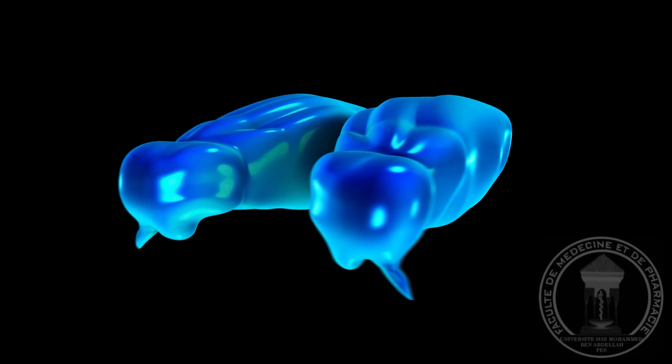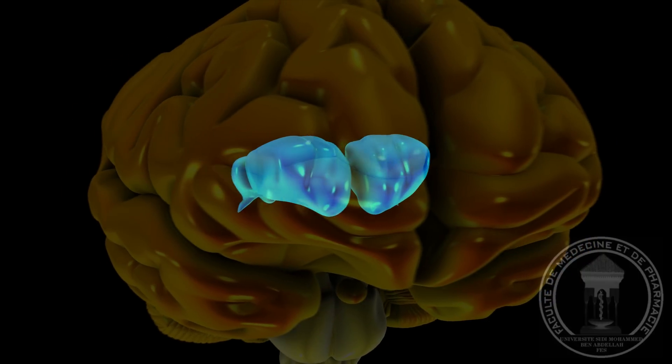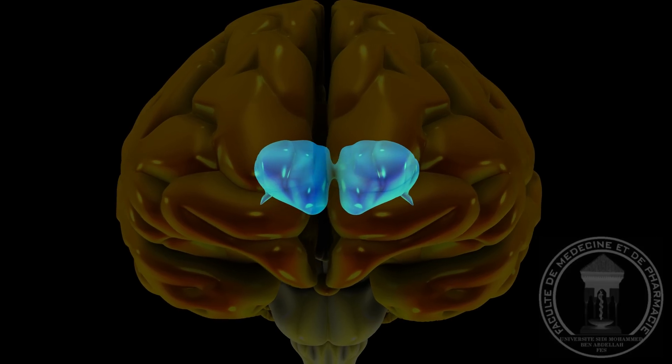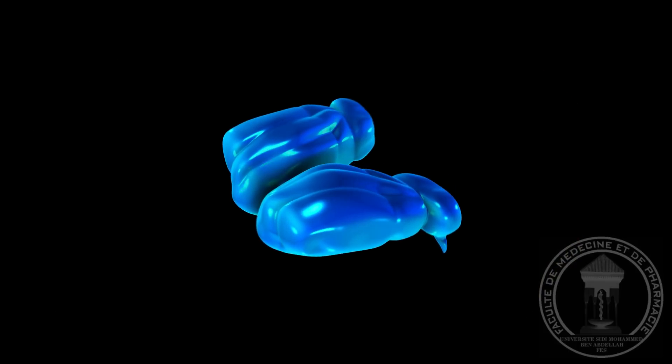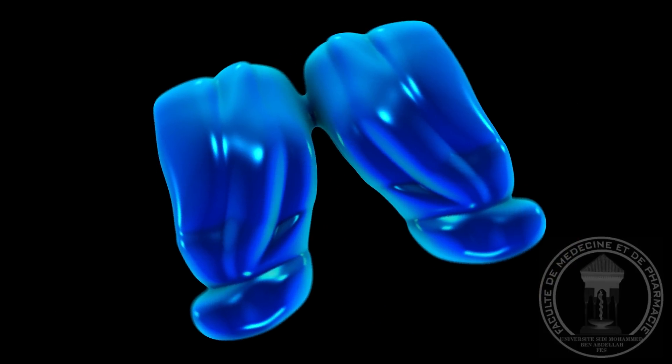ينقسم المهاد إلى كتلتين متماثلتين من المادة الرمادية واحدة في اليمين والأخرى باليسار غالبا ما يربطهما جسر بالوسط يدعى بالالتصاق بين المهادين